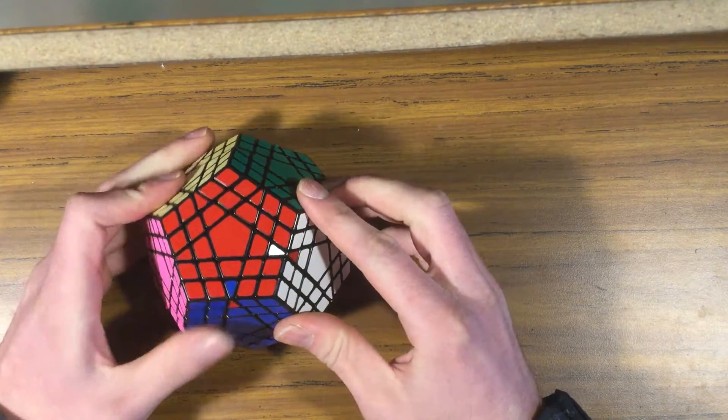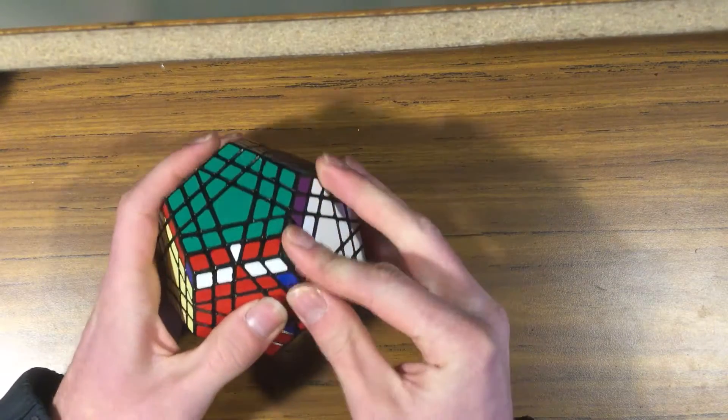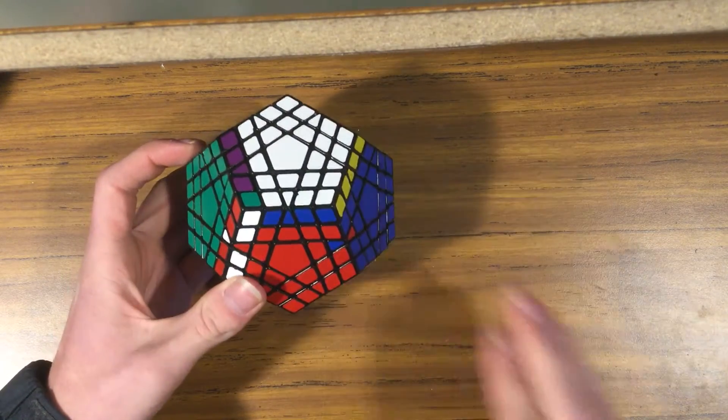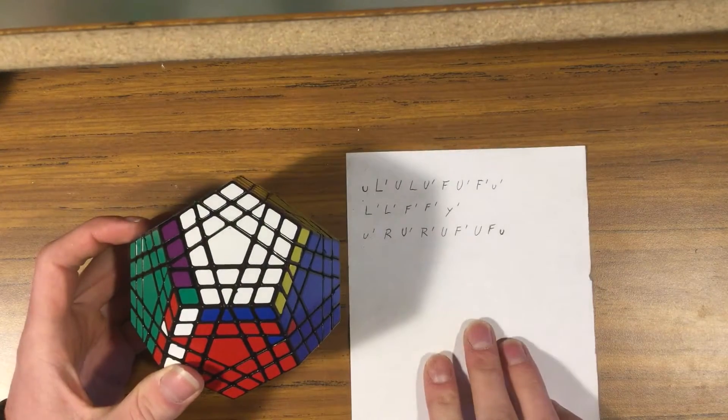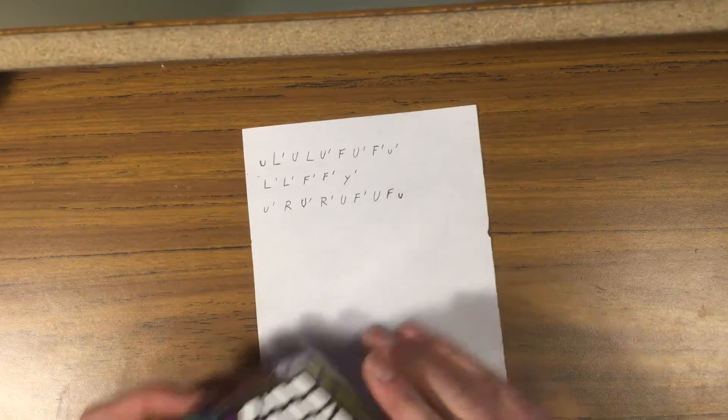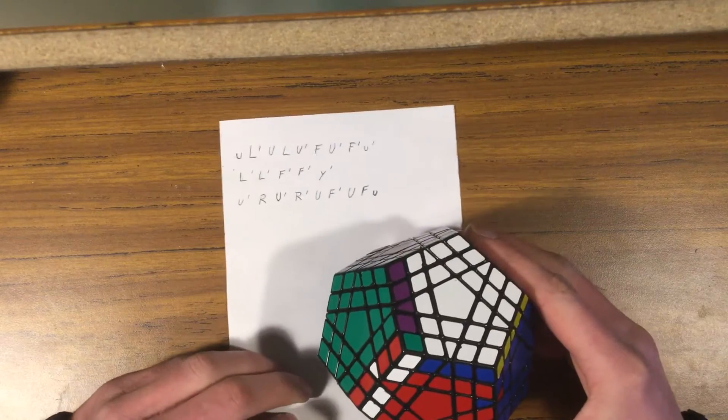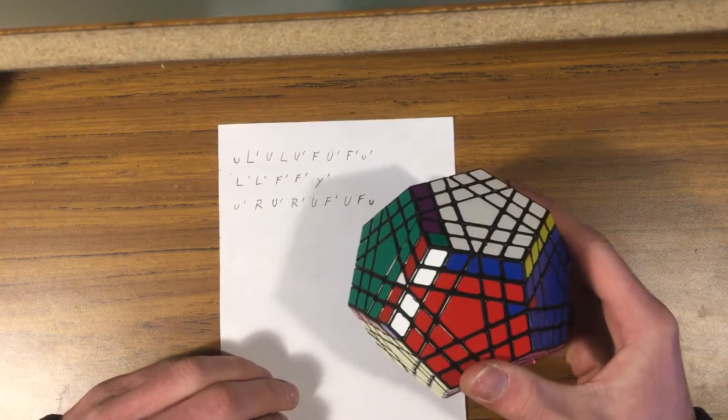I don't consider it parity, but someone asked me for an algorithm to fix this, so I came up with this. It's long, but this is the way I correct this issue with the Gigaminx.